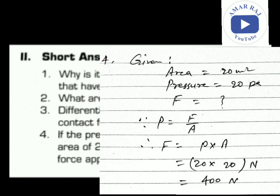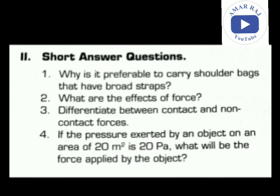By putting the value, since the values are in SI unit, you can put it directly according to the formula. Pressure is 20 pascal and area is 20 meter square, 20 multiplied by 20, and the unit of force is newton. So finally you will get the answer as 400 newton. These were answers of first four short answer questions.